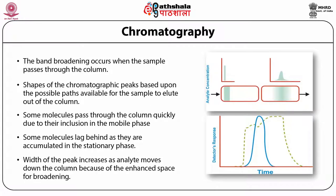Another important factor that affects column efficiency is band broadening. Band broadening occurs when the sample passes through the column. This can be explained by rate theory, which defines the shape of chromatographic peaks based on the possible paths available for the sample to elute out of the column. Some molecules pass through quickly due to inclusion in the mobile phase, while others lag behind accumulated in the stationary phase. This results in a Gaussian-shaped chromatographic band with widened velocities around the mean value, and the width of the peak increases as the analyte moves down the column due to enhanced space for broadening.